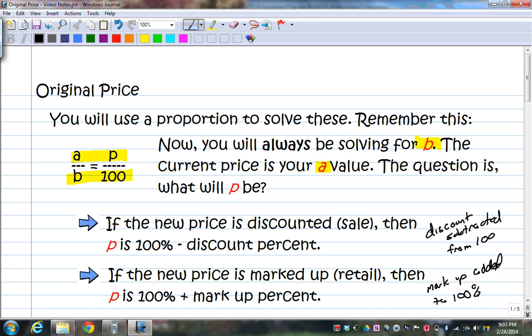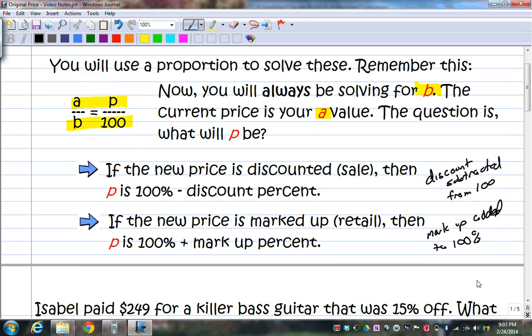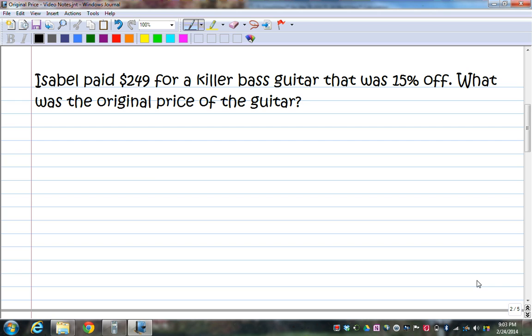So let's try a sample problem of this. Isabel paid $249 for a killer bass guitar that was 15% off. What was the original price of the guitar? Well, here's the key. It was 15% off. So in other words, it's been discounted. So you know we're going to use this p over 100 is equal to a over b.